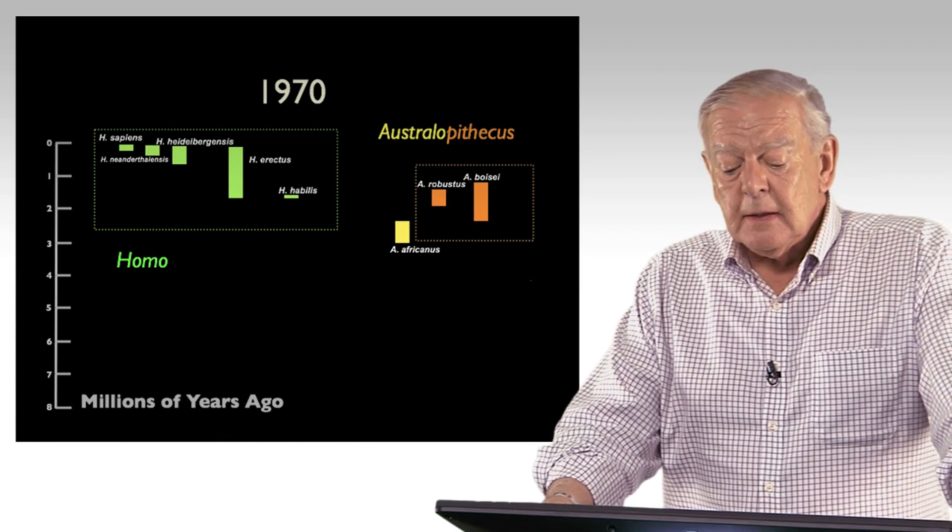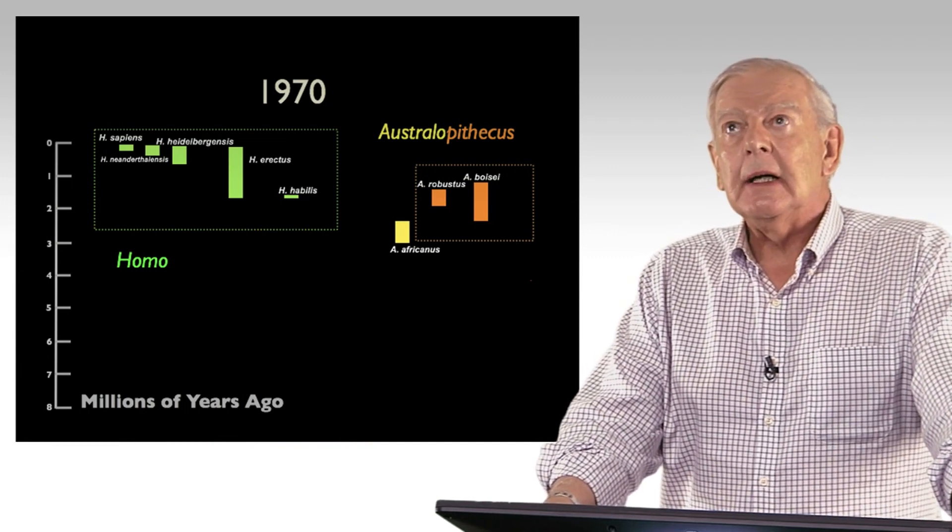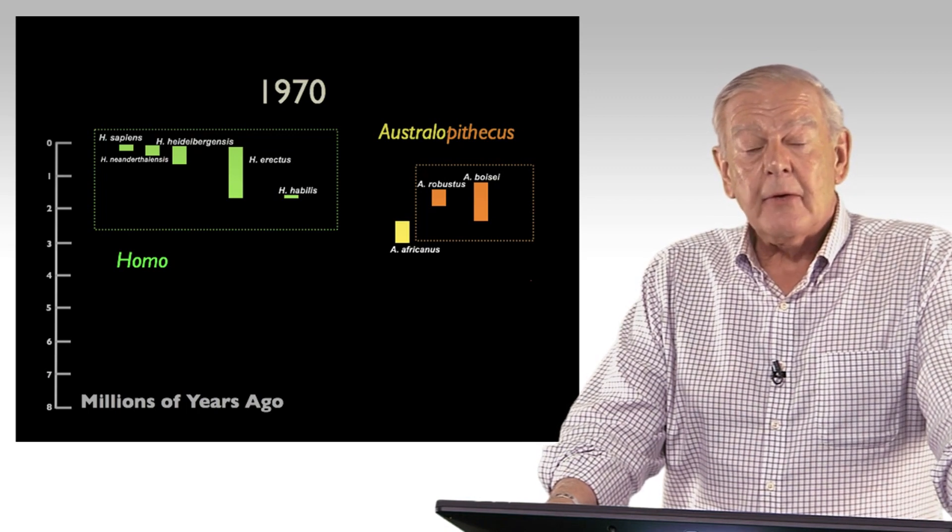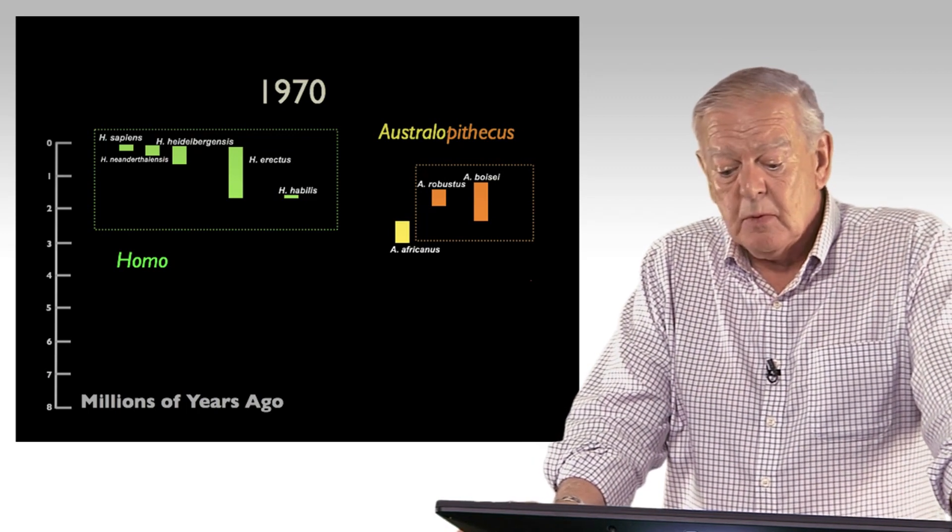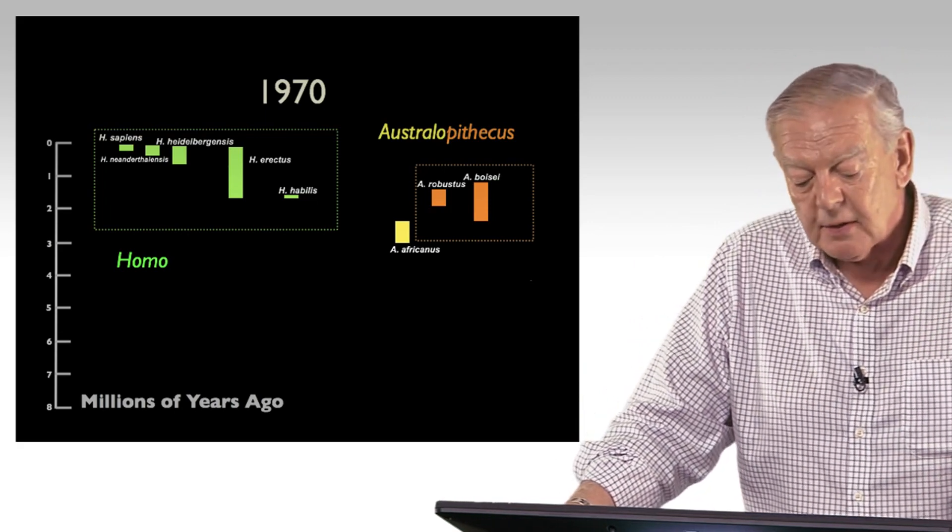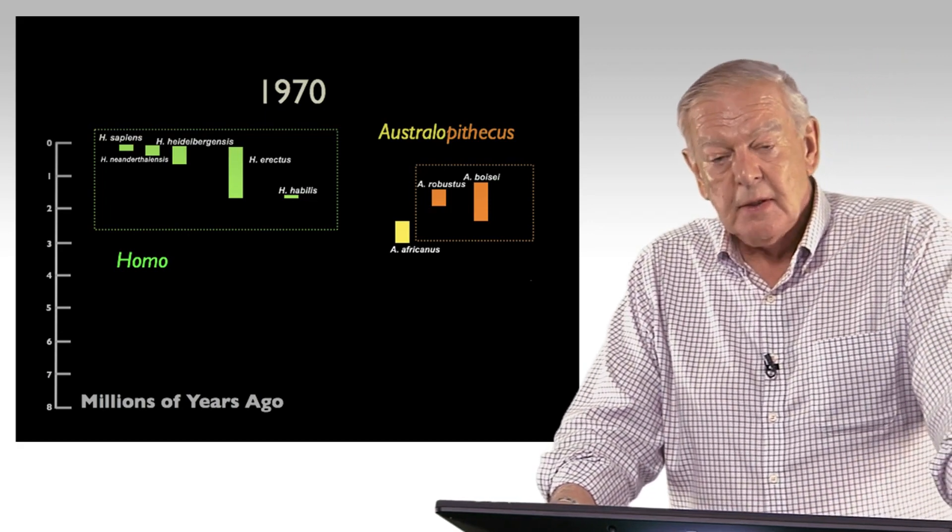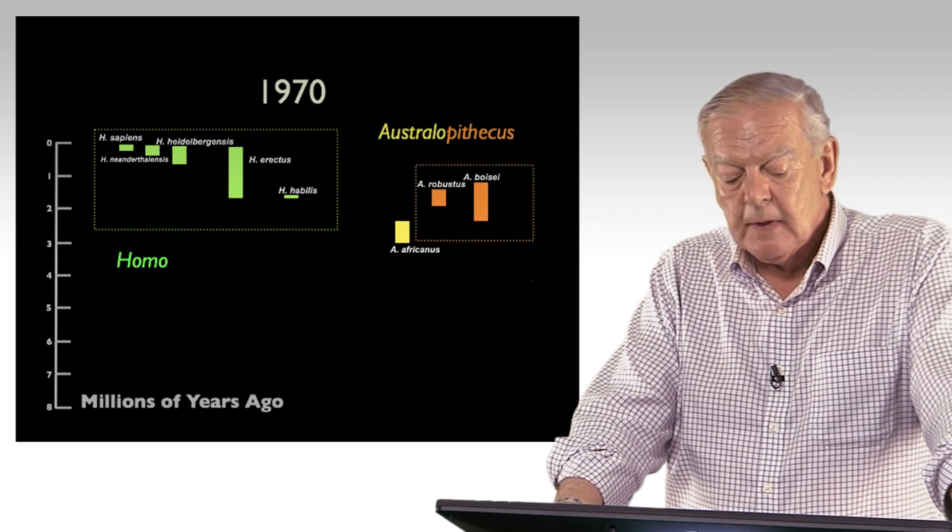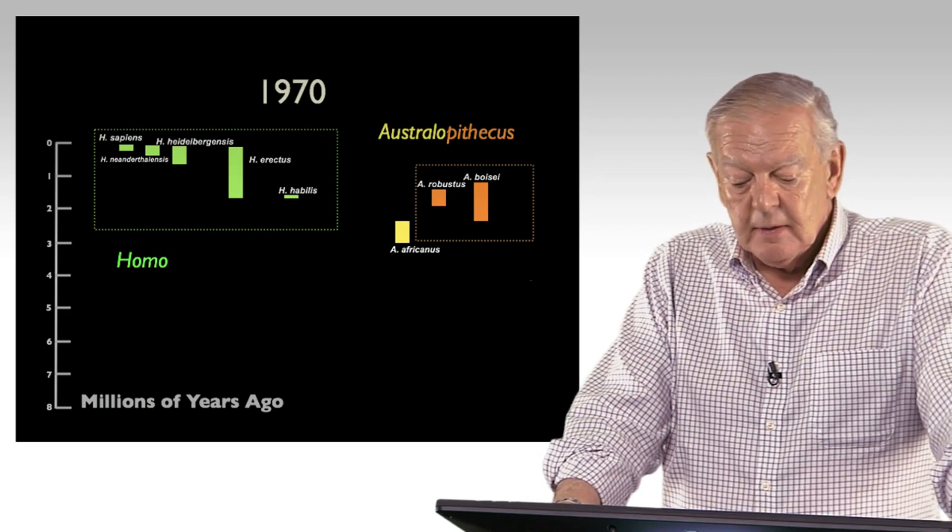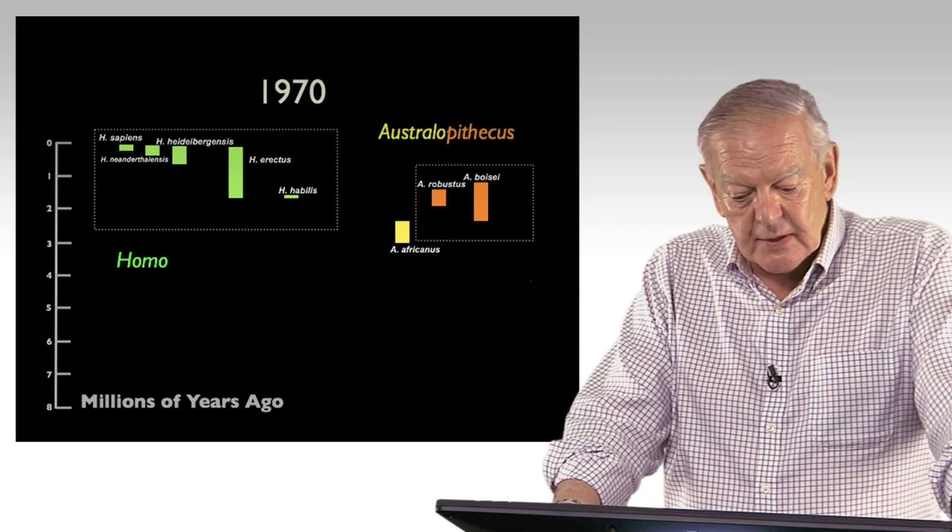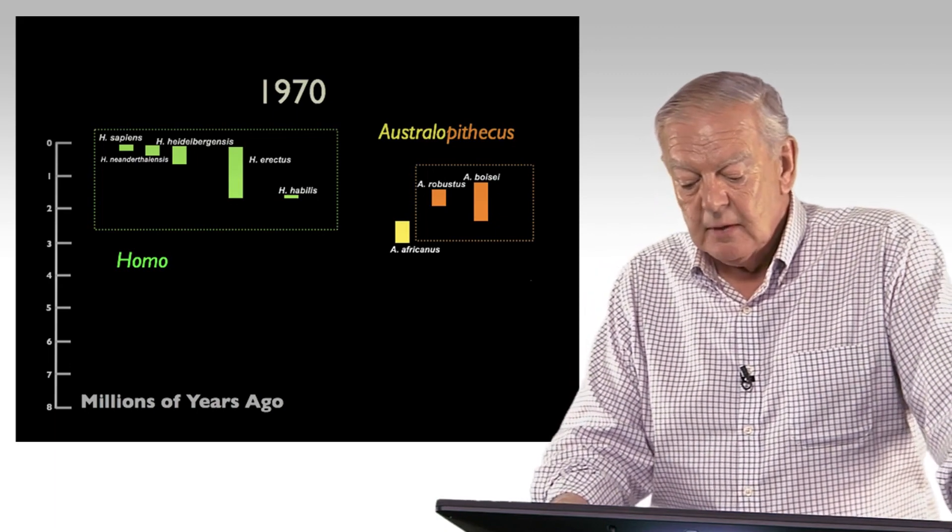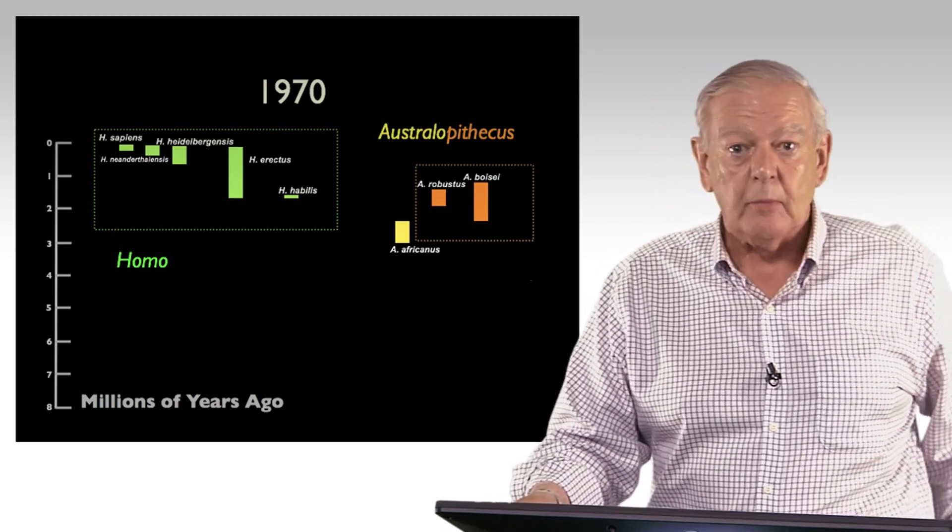Now, in 1970, when I was a young graduate student and my first year in Africa, this is what we had. We had Homo sapiens, Homo heidelbergensis, Homo neanderthalensis, Homo erectus, little Homo habilis, and Australopithecus. We had Robusts and Africanus in South Africa, and we had Boisei in East Africa, which are sometimes referred to as the Robusts.